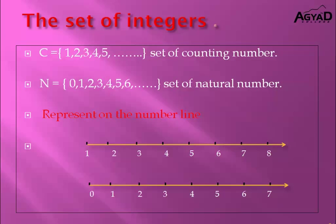We can represent counting numbers on the number line beginning from the number 1, and each number to the right of 1 is bigger than the previous number. That means 2 is bigger than 1, 5 is bigger than 4, 8 is bigger than 7. Similarly, natural numbers can be represented on the number line beginning from 0, and each number to the right of 0 is bigger than the previous number — for example, 2 is bigger than 1, 3 is bigger than 2, 7 is bigger than 6.